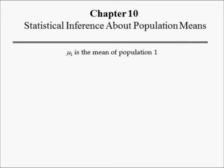Mu1 is the population mean from population 1. For example, mu1 could be the average time Brand A lipstick remains on the lips of all adult females in America. Mu2 is the mean from population 2; for example, it could be the average time Brand B remains on the lips of all adult females in America.